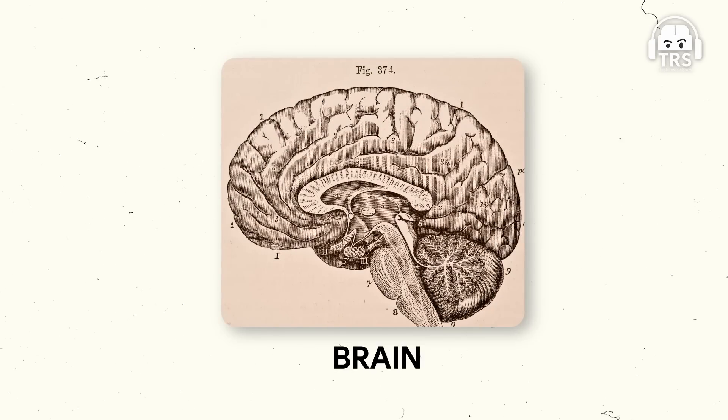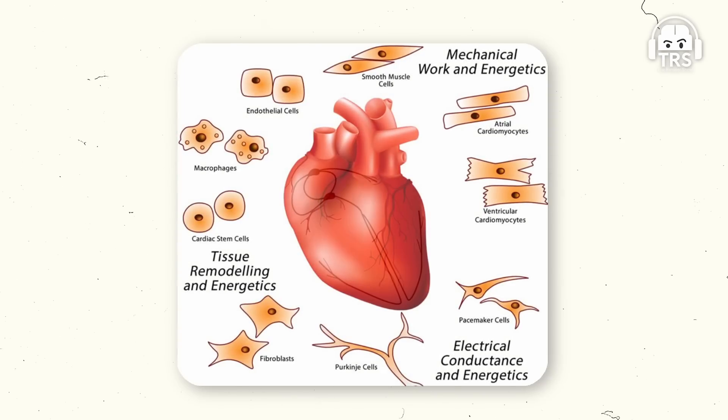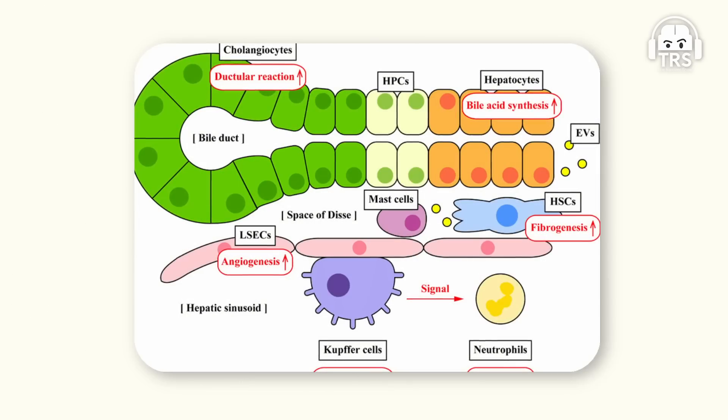The liver is made up of different types of cells, and there are no organs as complex as the liver. If you ask somebody which is the most complex organ, they'll say the brain, because the brain is so complex. But the brain has only two types of cells. The heart has four types of cells. But the liver has five primary types of cells, and there are so many subtypes of each.